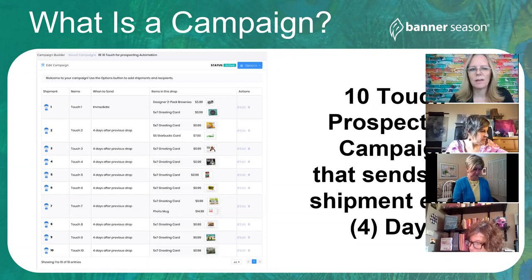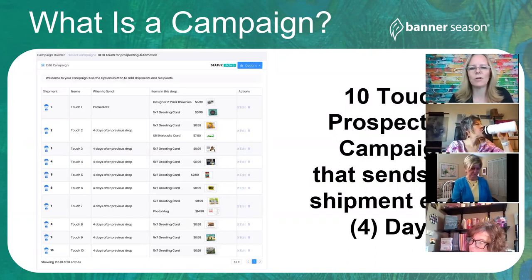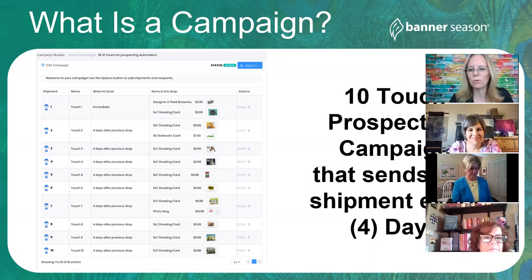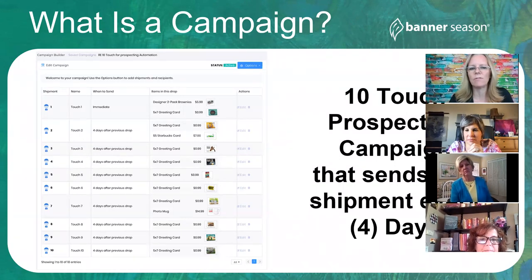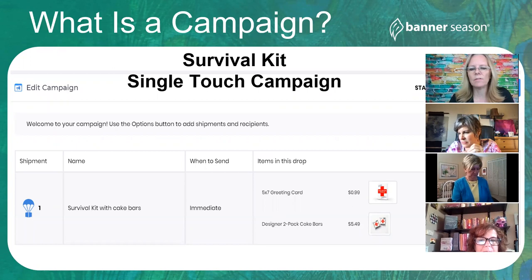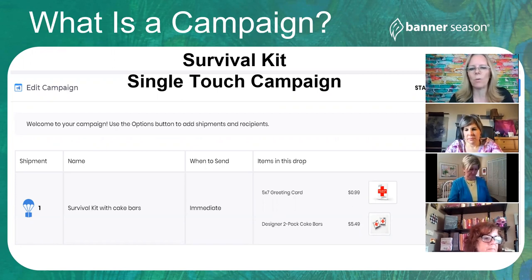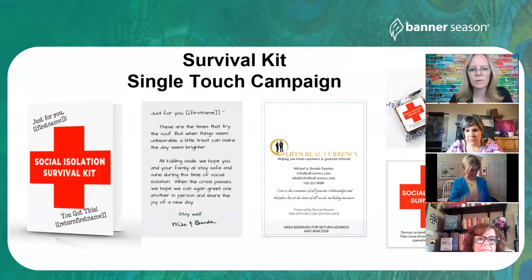The first question I always get is: what's a campaign? This is a 10-touch prospecting campaign — if you add somebody to it, they're going to get a shipment every four days. After 40 days, they hopefully know you and know you care. You can set it for every week, every month, or every couple of months. A campaign is a series of cards and gifts that go out over a time frame, or it can be a single-touch campaign.